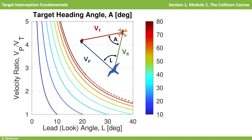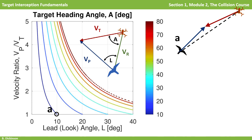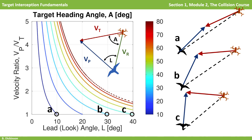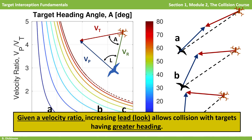What's the impact of greater pursuer lead on the collision triangle? Starting with 10 degrees lead and 10 degrees target heading at a velocity ratio of 1, holding the velocity ratio at 1 and increasing lead to 30 degrees allows collision with targets up to 30 degrees heading. And 40 degrees lead means collision with targets having 40 degrees heading. So clearly, greater pursuer lead means collision with greater target headings. Also, as the velocity ratio is increased, the same trend holds, but for any given target heading, less lead is required.